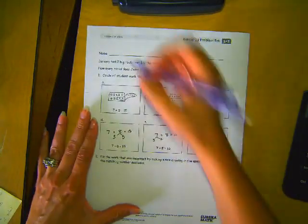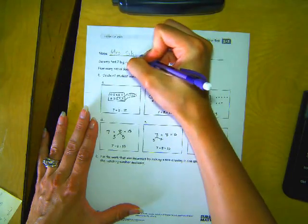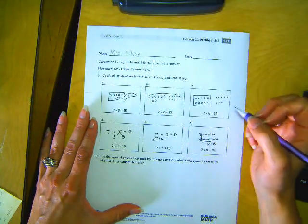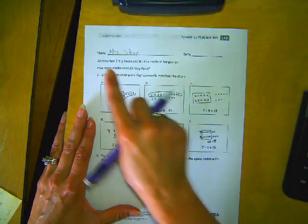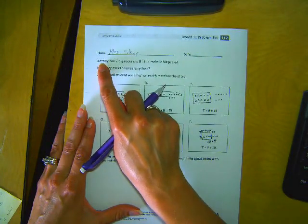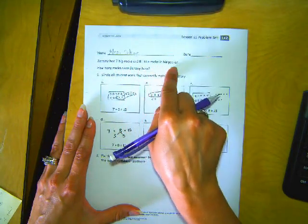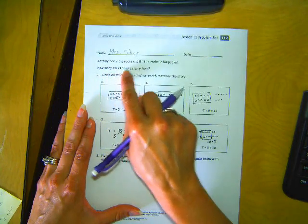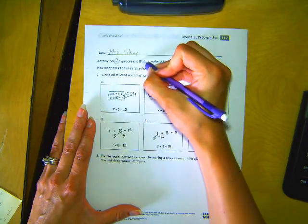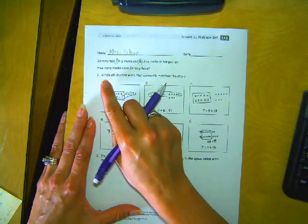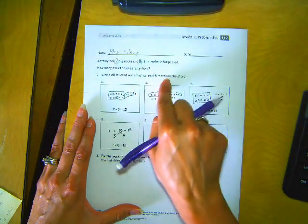New on the paper. First thing. Let's read those directions together. Jeremy had seven big rocks and eight little rocks in his pocket. How many rocks does Jeremy have? Well, let's circle those important numbers so we know what we're dealing with here. Number one, circle all student work that correctly matches the story.